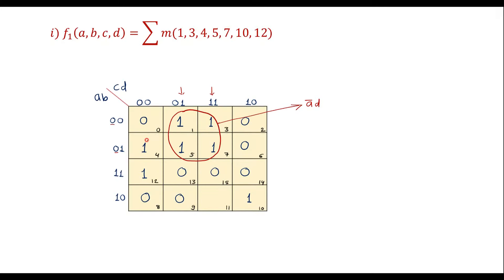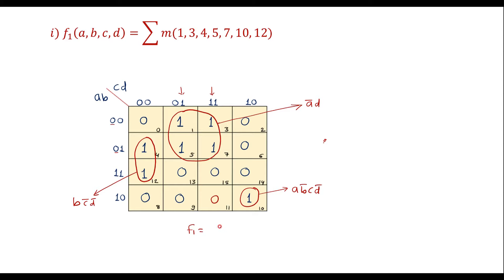Cells 4 and 12 can be paired together. The product term for this pair is: between these two rows the common factor belongs to B, and with respect to the column we have C̅D̅, giving BC̅D̅. There is one more 1 remaining in cell 10 with no adjacent cells, so it is taken as independent. Its product term with respect to rows is AB̅CD̅. Therefore, the simplified expression is F1 = A̅D + BC̅D̅ + AB̅CD̅.